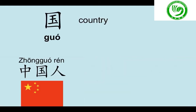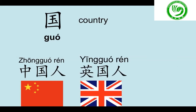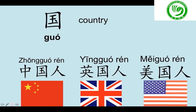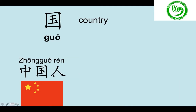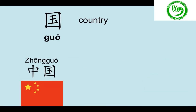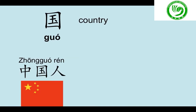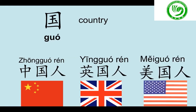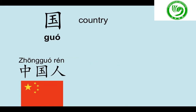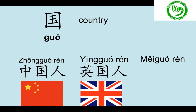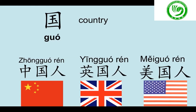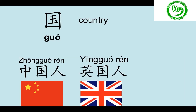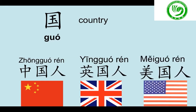Then how can we say 'Chinese people' or 'British people' or 'American people'? We just need to add 人 after the country. For example, China is 中国, then Chinese people is 中国人. Follow me, 跟我读: 中国人. Then British people: 英国人. Last one, American people: 美国人. 很好. Now you read it please: 中国人, 英国人, 美国人. 很好.